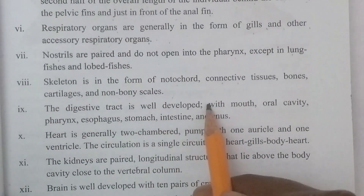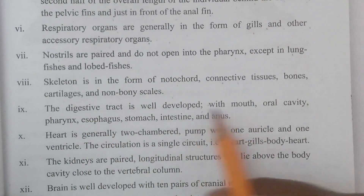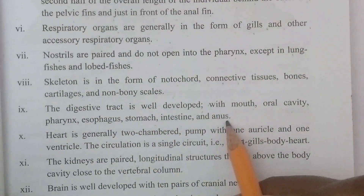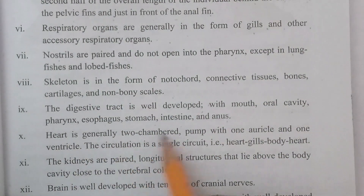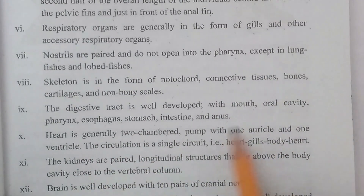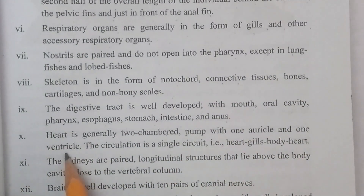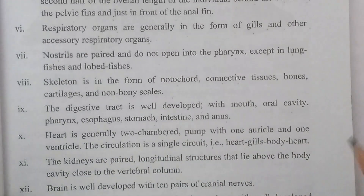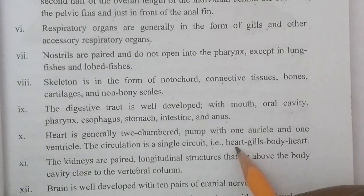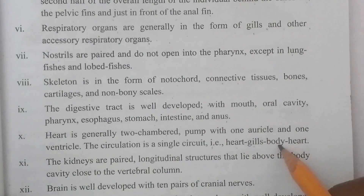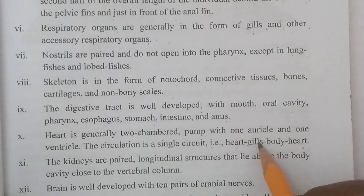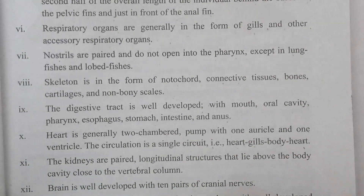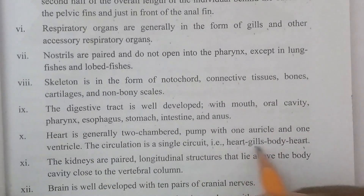The digestive tract is well developed, comprising mouth, oral cavity, pharynx, esophagus, stomach, intestine, and anus. The heart is generally two-chambered, consisting of an auricle and a ventricle. The circulation is a single circuit: heart → gills → body → heart.